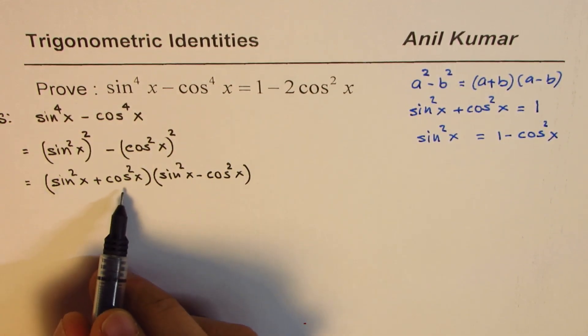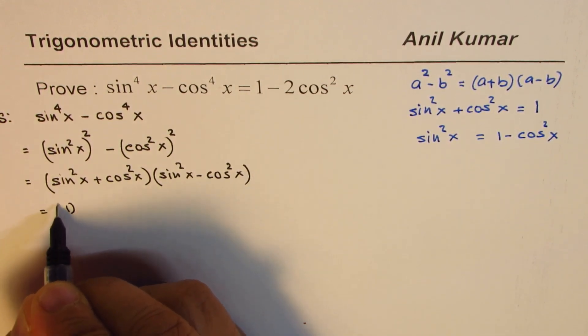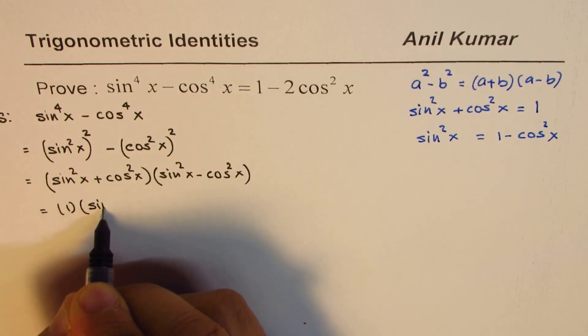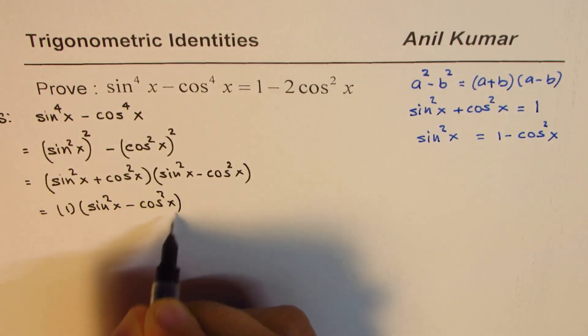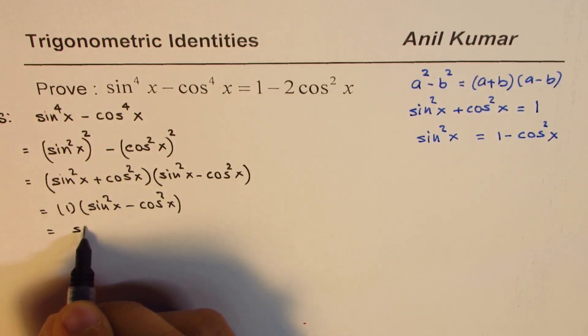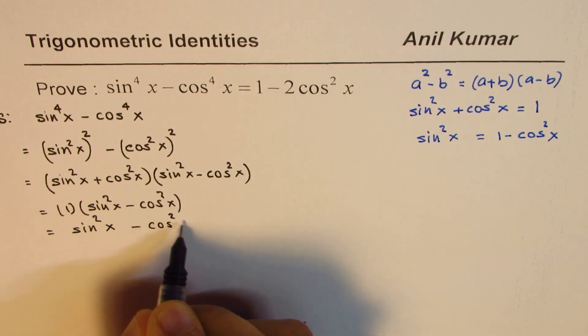Now this sum, sin²x plus cos²x, you know is 1. So this is 1 for us. We could write this as 1 times (sin²x - cos²x). That leaves us with sin²x minus cos²x.